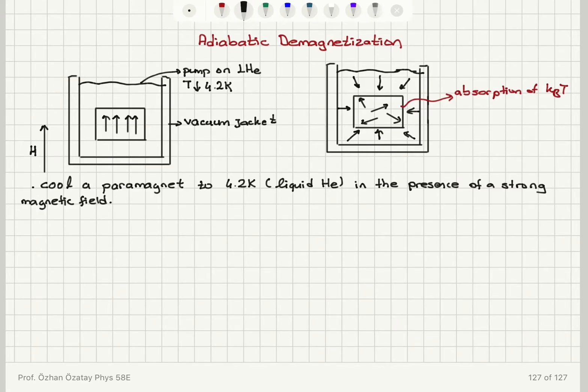If the paramagnet is thermally isolated, that is, it's encapsulated by a vacuum jacket, when the field is turned off, the spins will absorb thermal energy to randomize, which will decrease the temperature further.